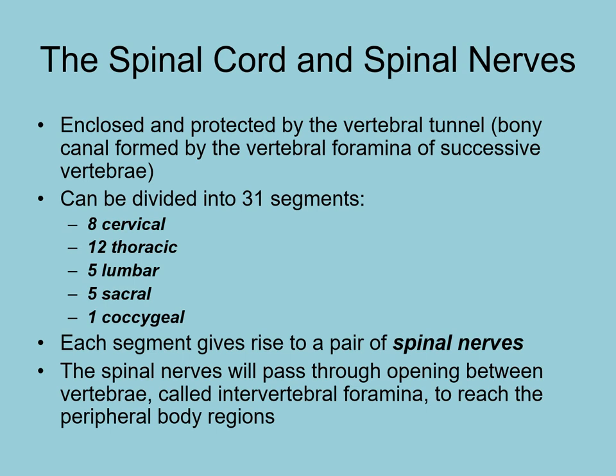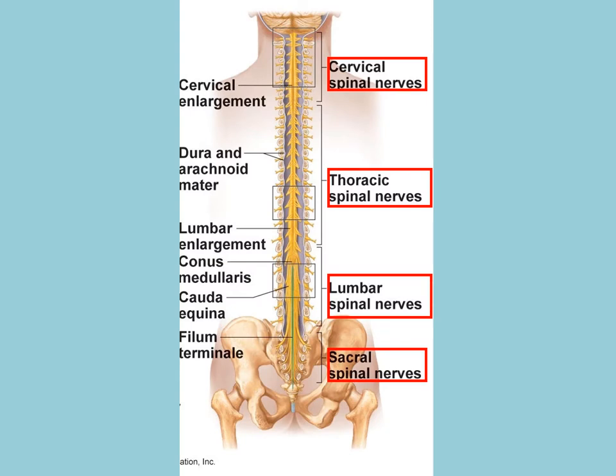The vertebral foramen is the opening of each vertebra through which the spinal cord runs. The spinal nerves are divided into 31 different pairs, corresponding to segments of the spinal cord: eight cervical, twelve thoracic, five lumbar, five sacral, and one coccygeal. Each segment gives rise to a pair of spinal nerves that pass through the intervertebral foramen to extend out into the peripheral regions of the body.